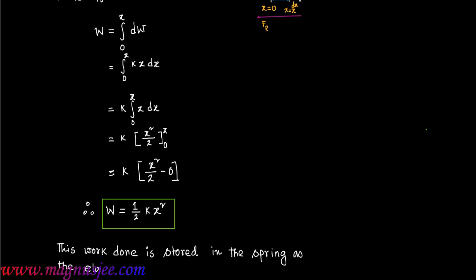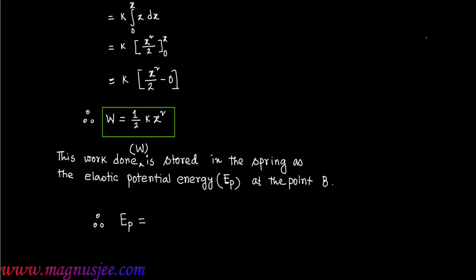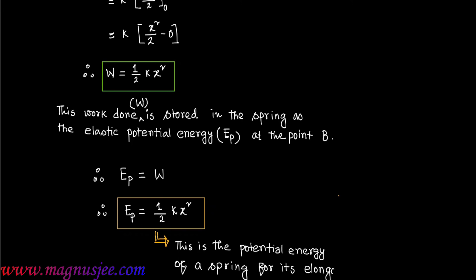This work done is stored in the spring as elastic potential energy Ep. Therefore Ep equal W, putting the expression of W: Ep equal half k x squared. This is the expression of elastic potential energy or potential energy of a spring for its elongation x.